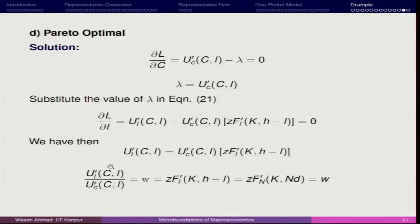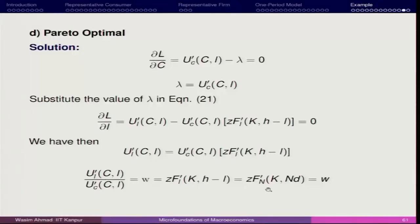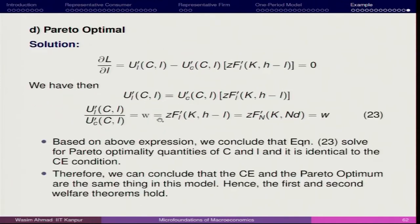Even with the condition of Pareto-optimality, we are achieving the same condition that we achieved in the case of competitive equilibrium. This shows that whatever competitive equilibrium we have achieved is also socially efficient. That means when you leave the market — if it is a free market economy where firms and labour are interacting, both being price takers and not price deciders — this is what we are going to see. The Pareto-optimal condition we have achieved: equation 3 solves the Pareto-optimality quantities for both consumption and leisure, and it is identical to the competitive equilibrium achieved.